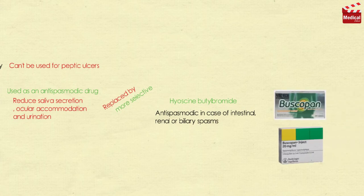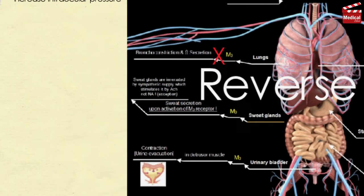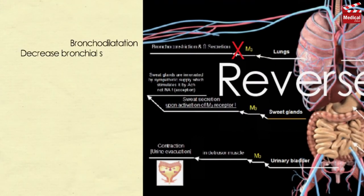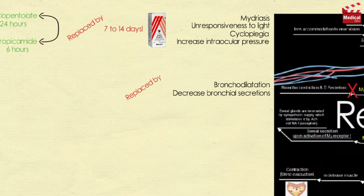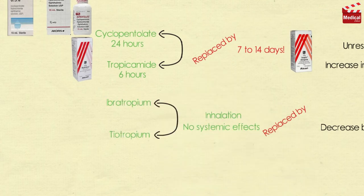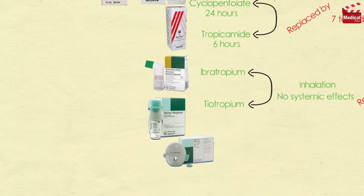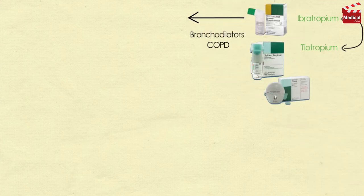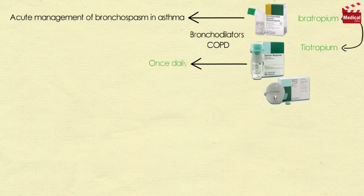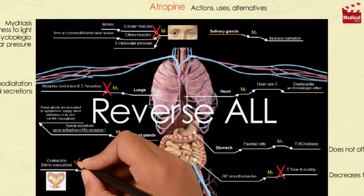Atropine also causes bronchodilation and decreases bronchial secretions, but it has been replaced by inhaled agents with no systemic effects, such as ipratropium and tiotropium, known commercially as Atrovent and Spiriva respectively. These agents are approved as bronchodilators for maintenance treatment of bronchospasm associated with chronic obstructive pulmonary disease. Ipratropium is also used in the acute management of bronchospasm in asthma. Tiotropium is administered once daily, a major advantage over ipratropium which requires dosing up to four times daily.